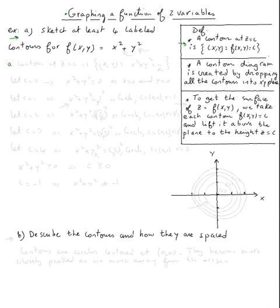So a contour at z = c is the set of all (x, y) such that x² + y² = c. Let's sketch some of them. At c = 0, we get x² + y² = 0, which means x = 0 and y = 0 — the only way for x² + y² to equal zero. So at c = 0, we get a single point.